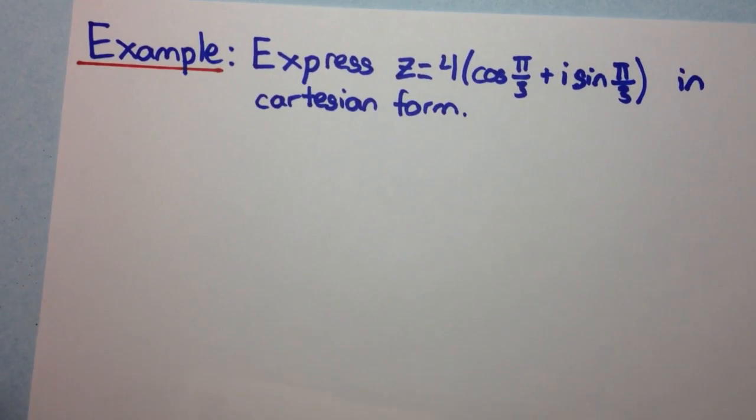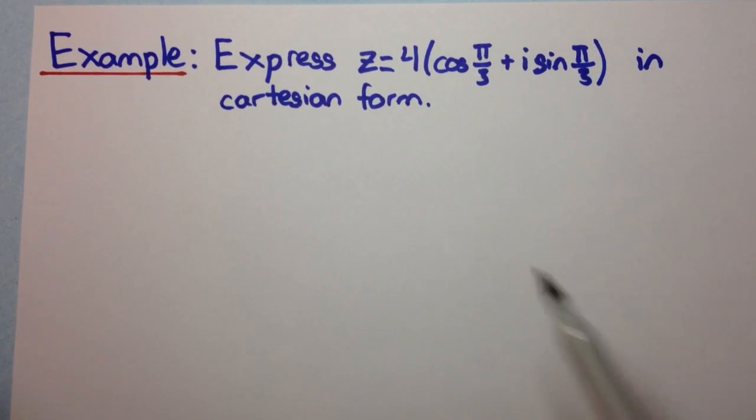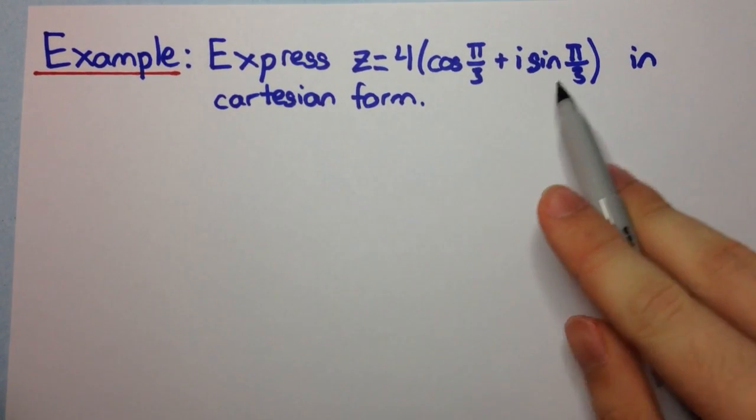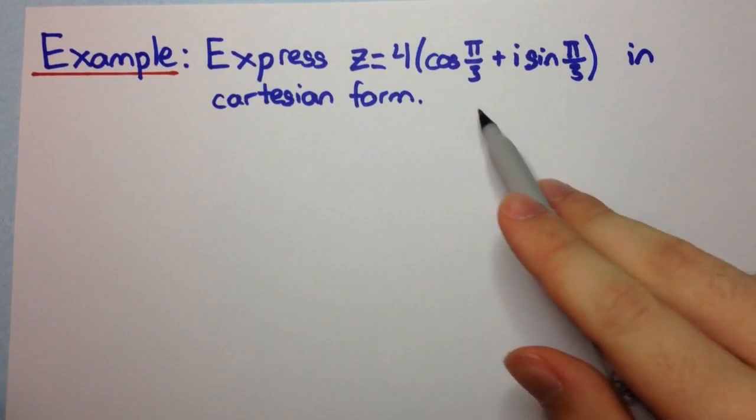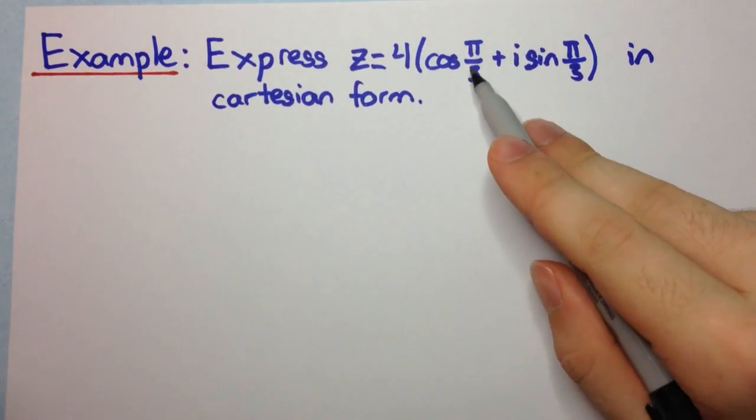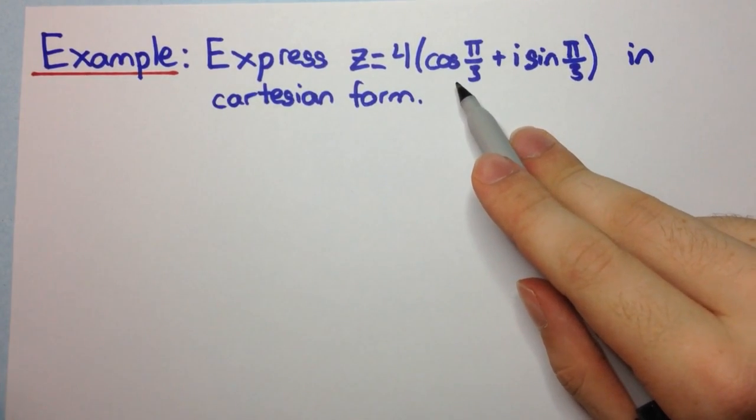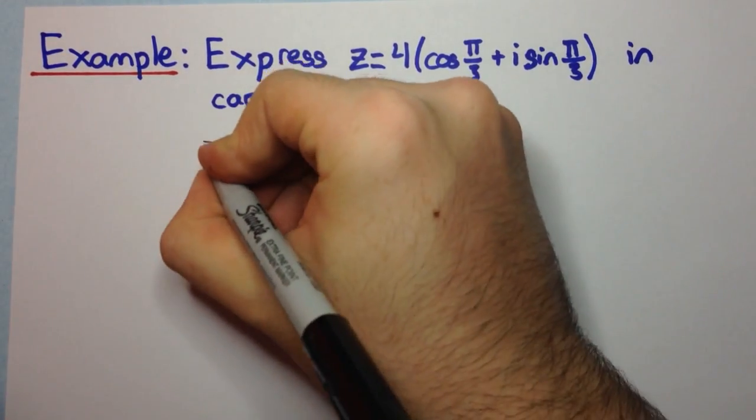Alright, let's have a look at the next example. Express z equals 4 into cos pi on 3 plus i sine pi on 3 in Cartesian form. So this one is going to be fairly easy because this is pi on 3. We know our exact values of cos pi on 3 and sine pi on 3.